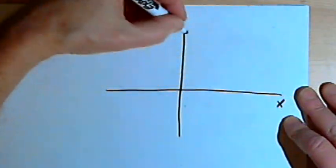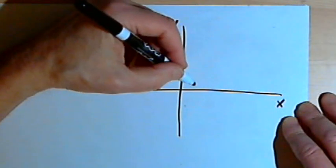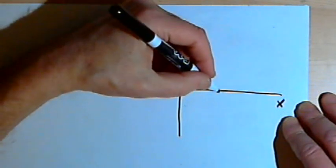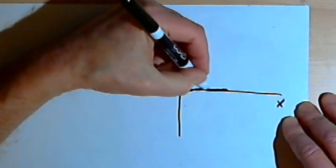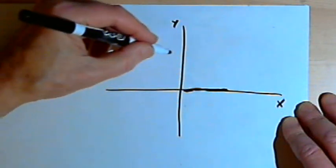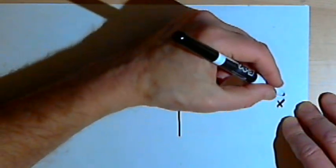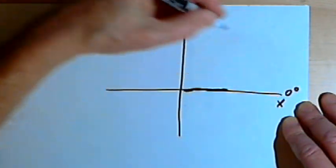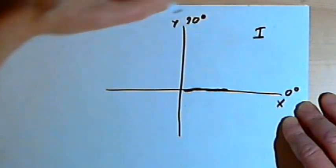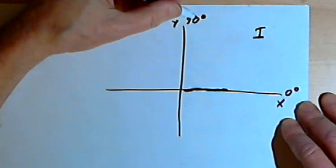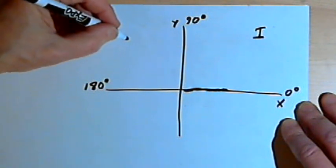We'll start out with a coordinate plane — an x-axis and a y-axis. An angle in standard position is going to begin on the positive side of the x-axis and travel counterclockwise around the origin. If it travels anywhere from 0 degrees up to 90 degrees, it's going to stay in the first quadrant. For the next 90 degrees, from 90 degrees to 180 degrees, the angle will be in the second quadrant.